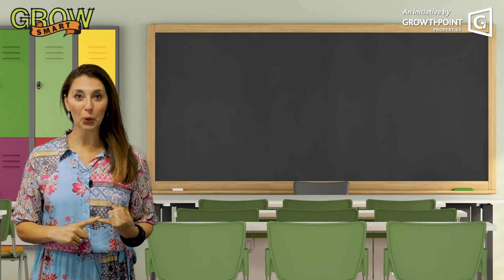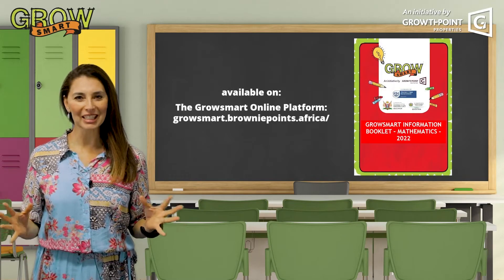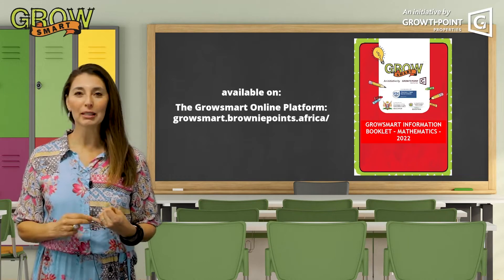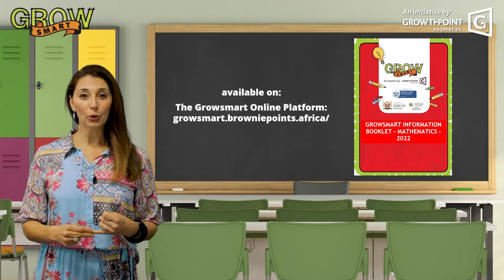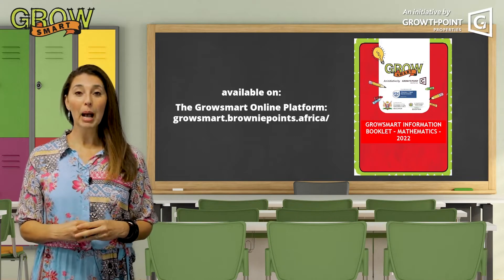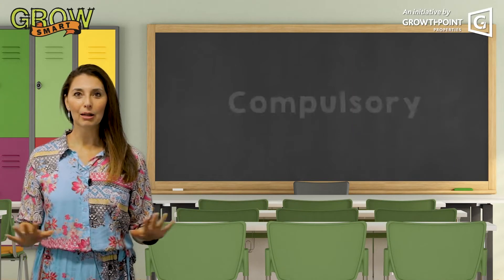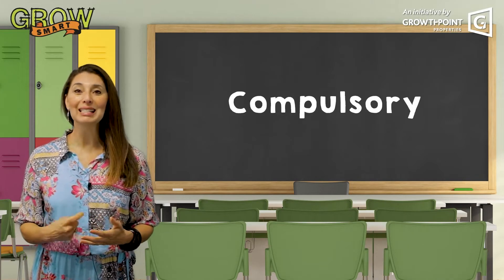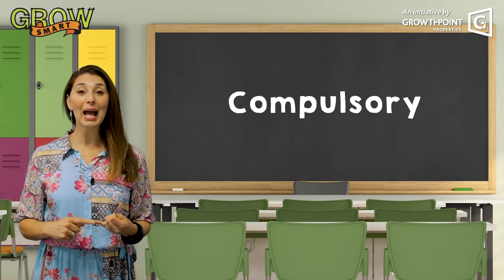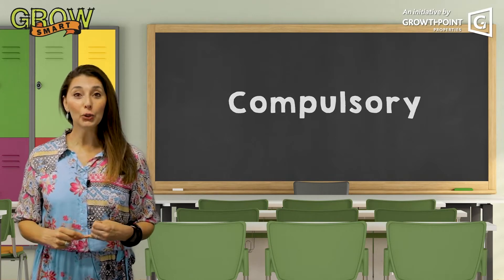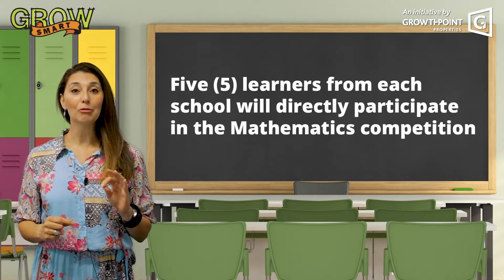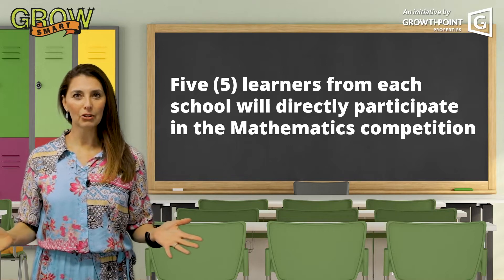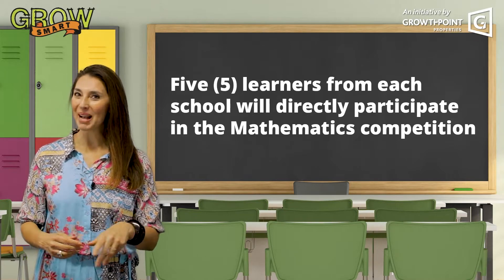First, check your launch booklet — all this information is in there. Go to our website and find your launch booklet if you don't have a copy. Remember, mathematics is compulsory in 2022, meaning every single school has to participate. You need to provide five learners who will directly participate in the Grow Smart Mathematics Competition.